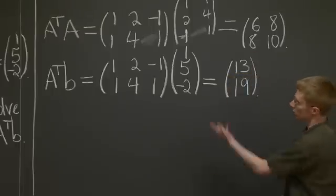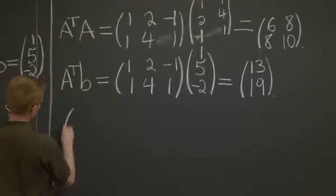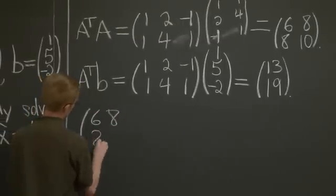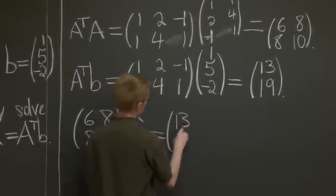Good. So this is just some computation. And so what we're solving here is [6, 8; 8, 10] times x̂ equals [13, 19].